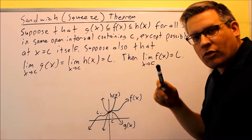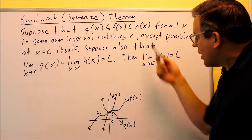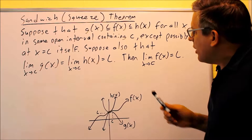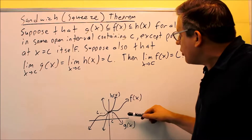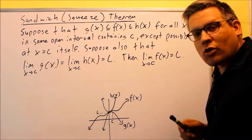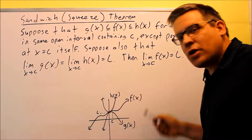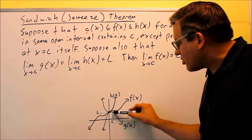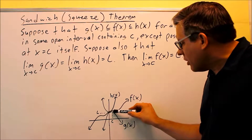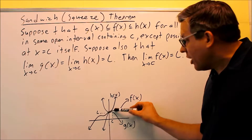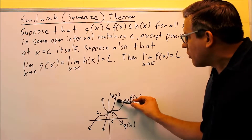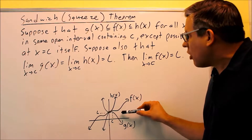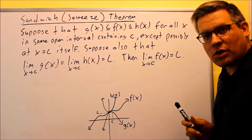On a certain interval containing the c that you're trying to find, f of x is going to be bigger than g of x but smaller than h of x. I drew a picture here so you can see visually what's happening. At c, f of x is in the middle, h of x is the bigger one, and g of x is the smaller one — that's exactly how we have it set up.